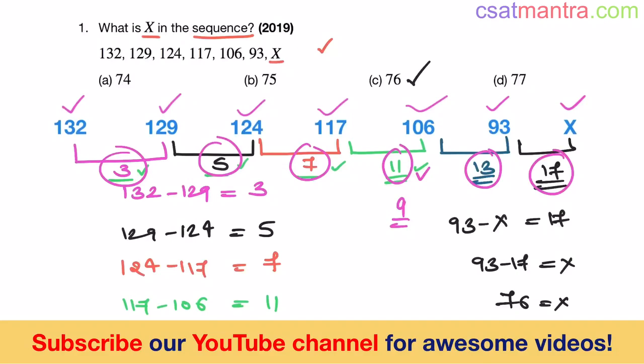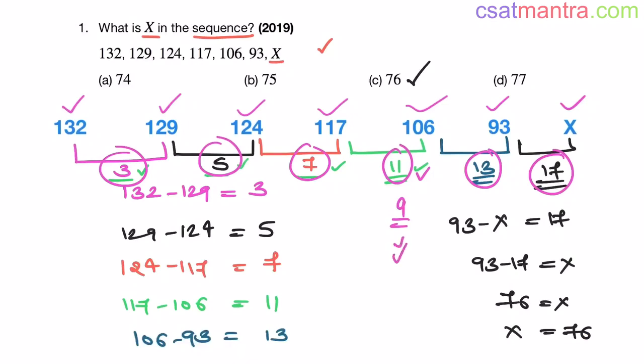Okay, if it was a subtracting odd numbers pattern, we should be having 9 here, we should be having 11 here. But we didn't have like this. Okay, we have 11 here, we have 13 here. That means it is a subtracting prime numbers pattern. So this is it - these are only two possibilities you have here. So our answer is 76.